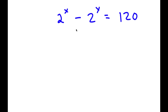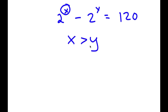In this problem, I have 2 to the power of x minus 2 to the power of y is equal to 120. Just looking at this problem, we can see that x is going to be greater than y. This is because if x were less than y, this would result in a negative number. But because x is greater than y, this is why it's going to equal a positive number.